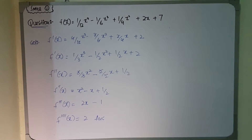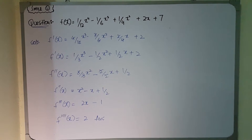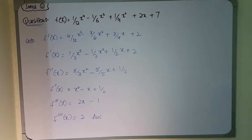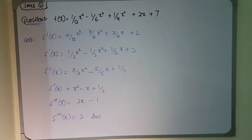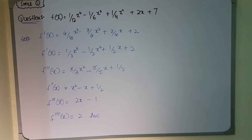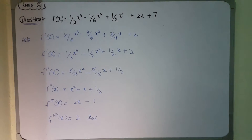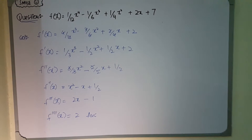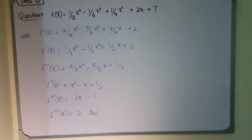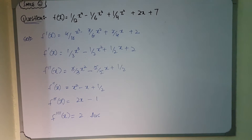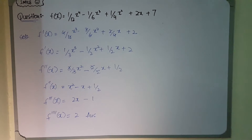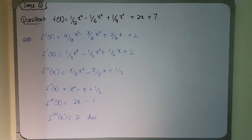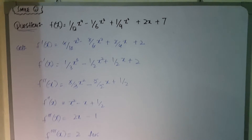A question on successive differentiation or higher derivatives would be given like this: f(x) = (1/12)x⁴ − (1/6)x³ + (1/4)x² + 2x + 7. The question asks us to find the higher derivatives of the given polynomial. So we begin by applying the derivative.